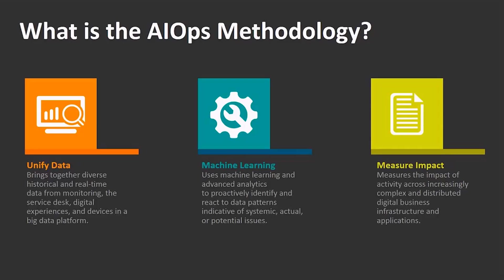AI ops essentially refers to IT operations platforms that use artificial intelligence to make IT operations smarter. It does this first by unifying data — a key strategy behind TruSight — bringing all the data together whether it's application data or infrastructure data. Then it leverages machine learning and advanced analytics to start detecting patterns across the data. Finally, it's all about using this data and machine learning to measure impact and act on this information across an increasingly complex IT environment.